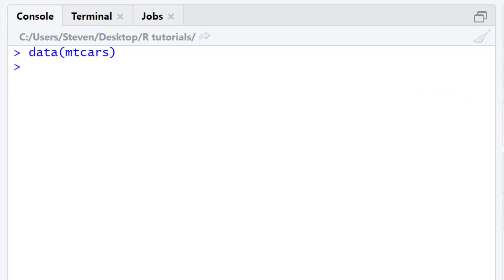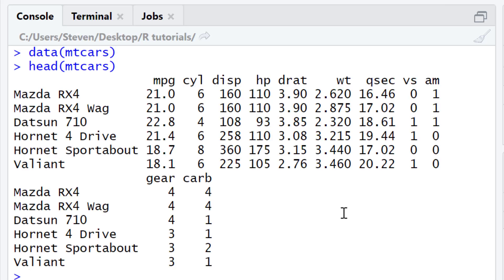I'm going to take a little peek at the dataset by using the head function by typing in head, open bracket, and then mtcars. The data frame contains 11 variables, but the two I'm interested in are the mpg, or the miles per gallon, and the horsepower, or hp.